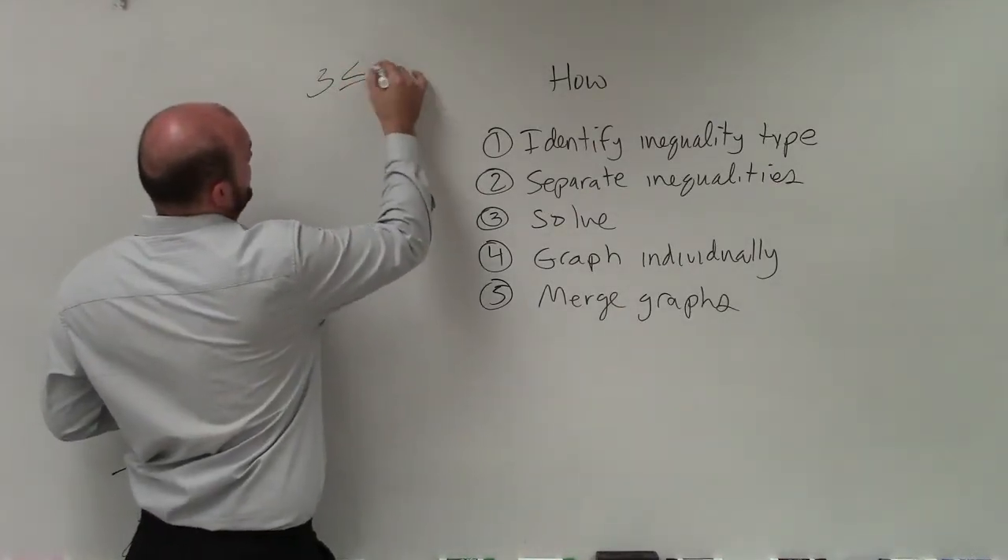Sometimes we have an inequality that looks like this: 3 less than or equal to 3x minus 1 is less than or equal to 5. Therefore, that inequality is an 'and' compound inequality. So you need to make sure you understand the difference of the 'and' and the 'or'. And a lot of times, we'll just write out two separate inequalities as an 'and' or an 'or'.